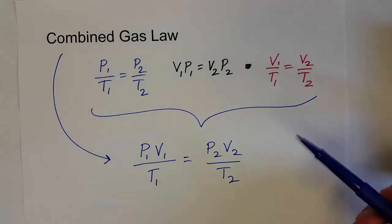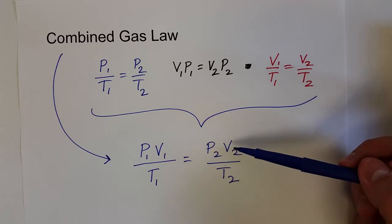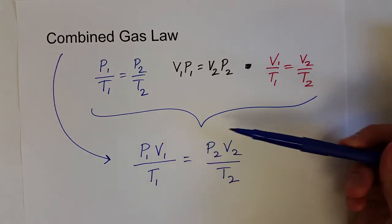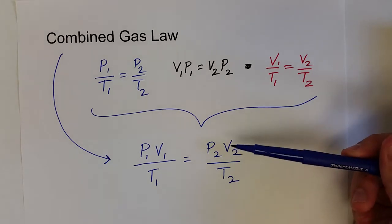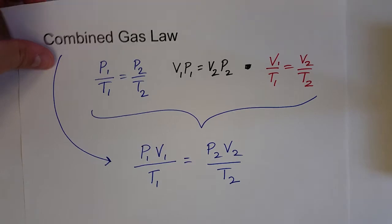And so what we can do, again, if we know our initial conditions and we change, say, pressure and volume, we can figure out the new temperature. Or if we know the initial conditions and we know the volume and temperature, we can determine the final pressure. All right, so let's take a look at one of these examples.